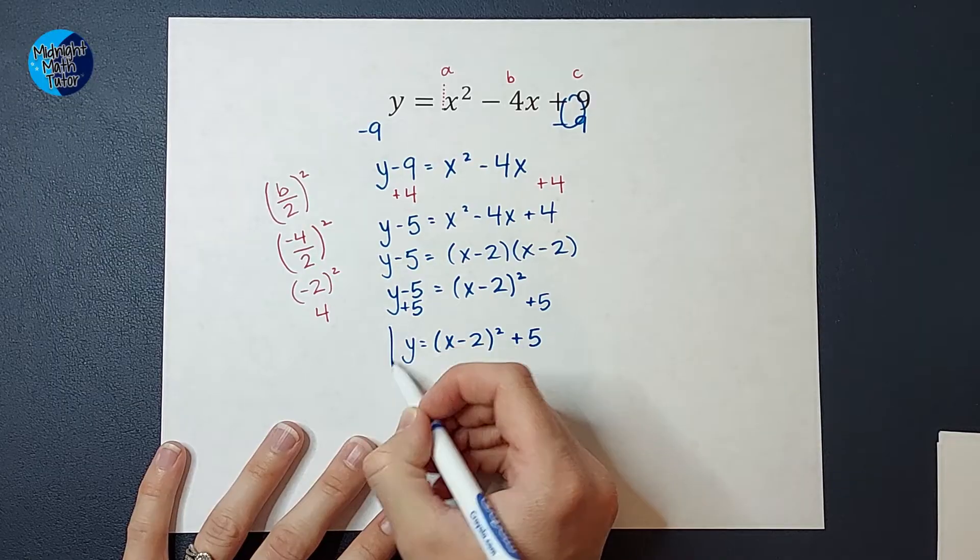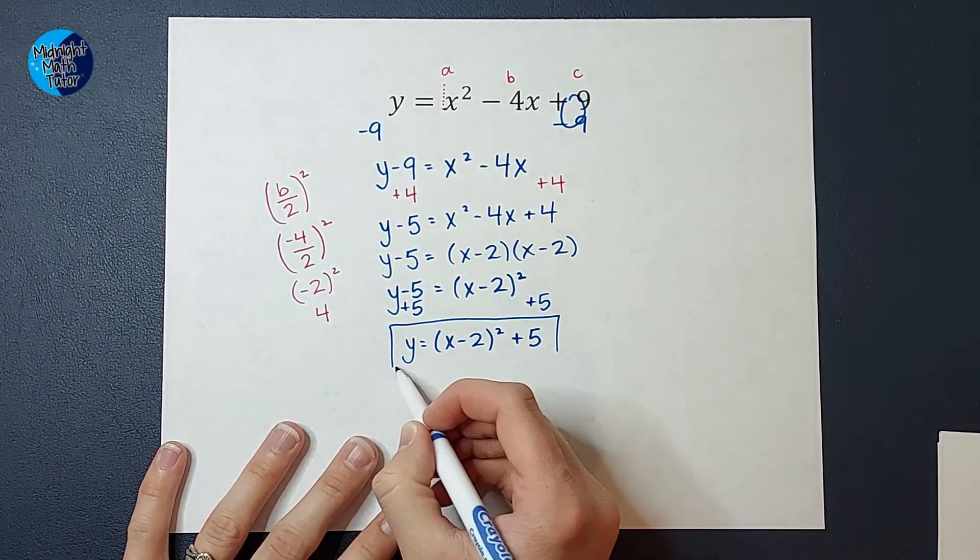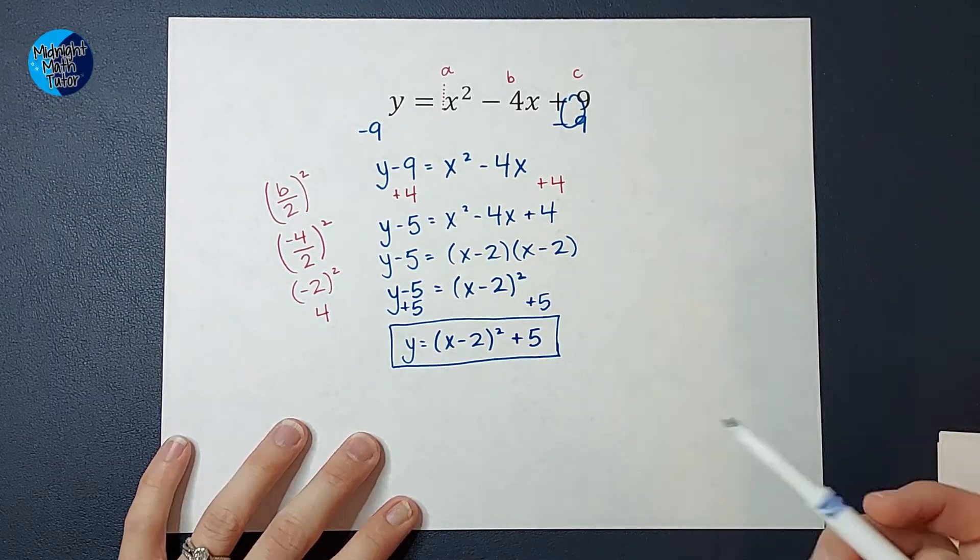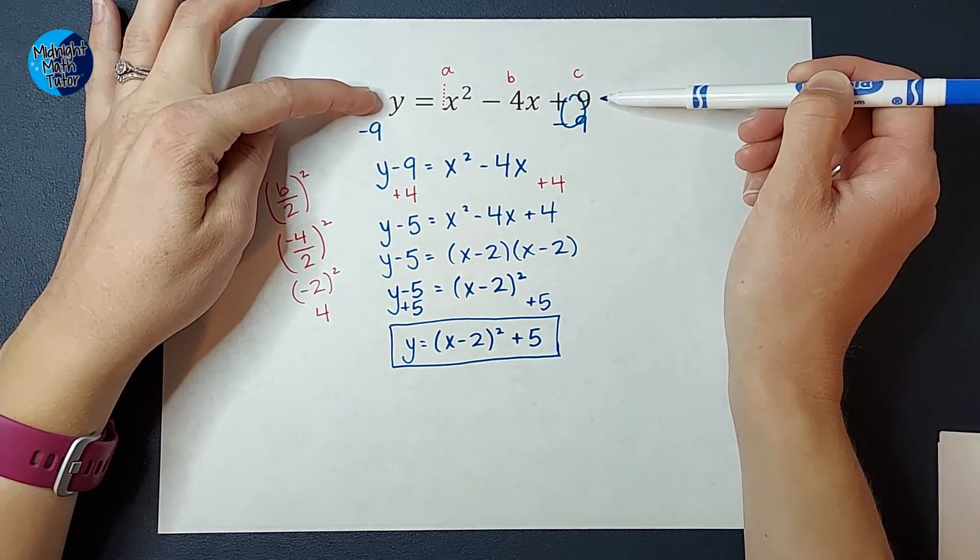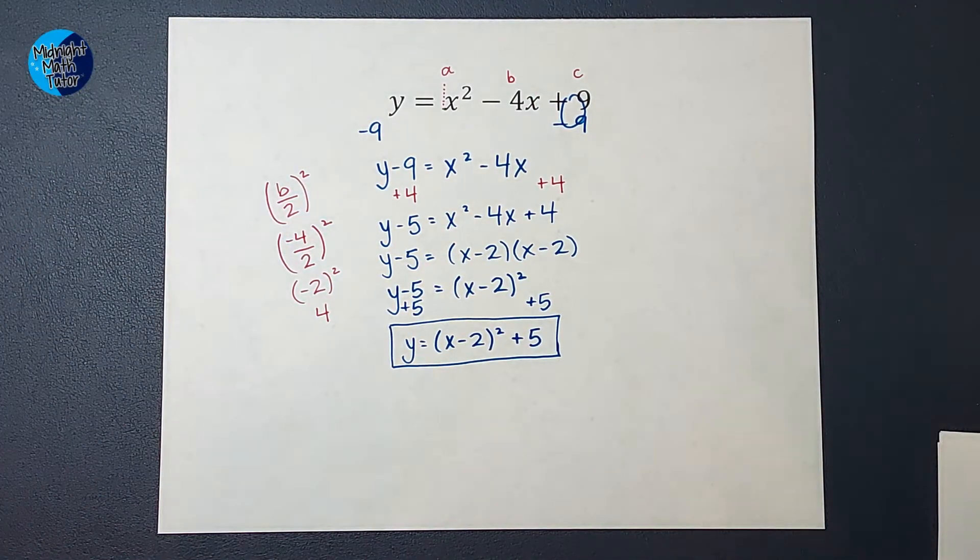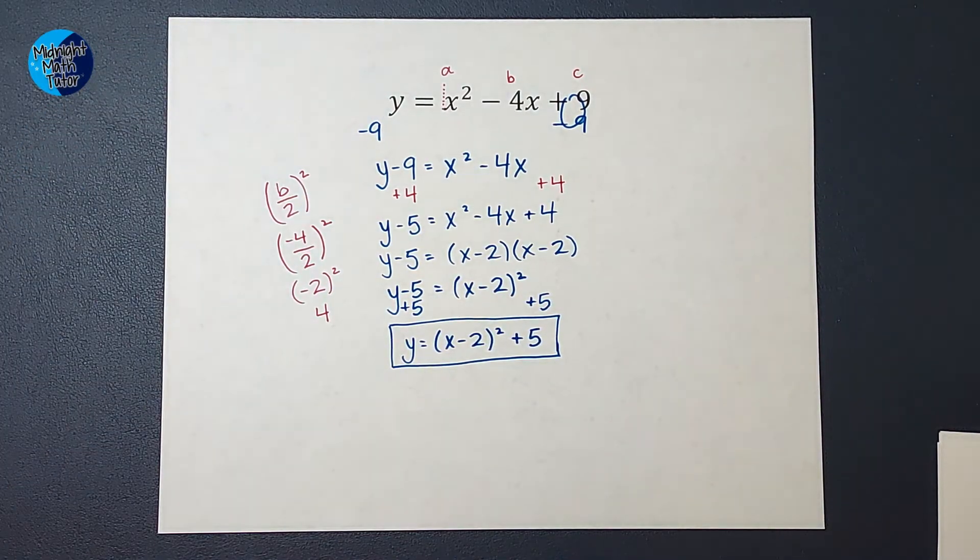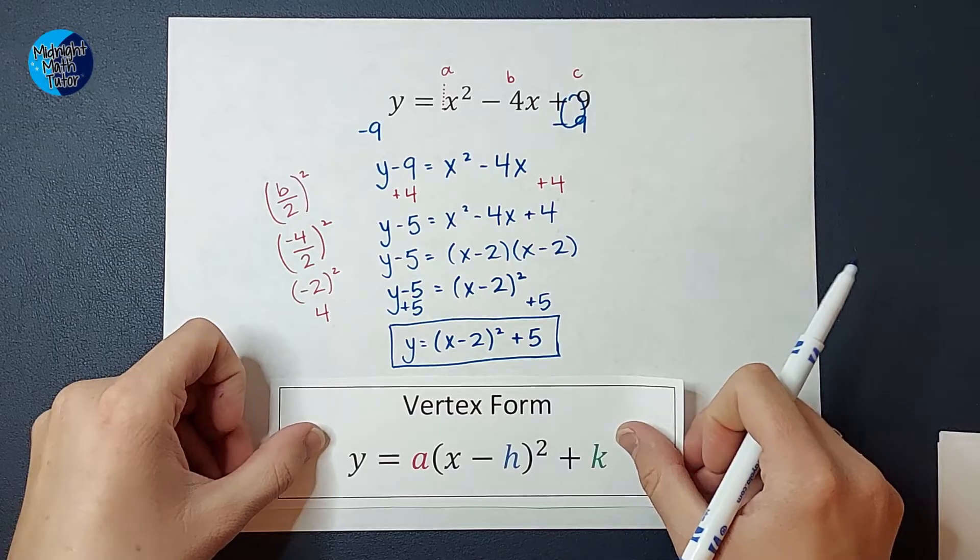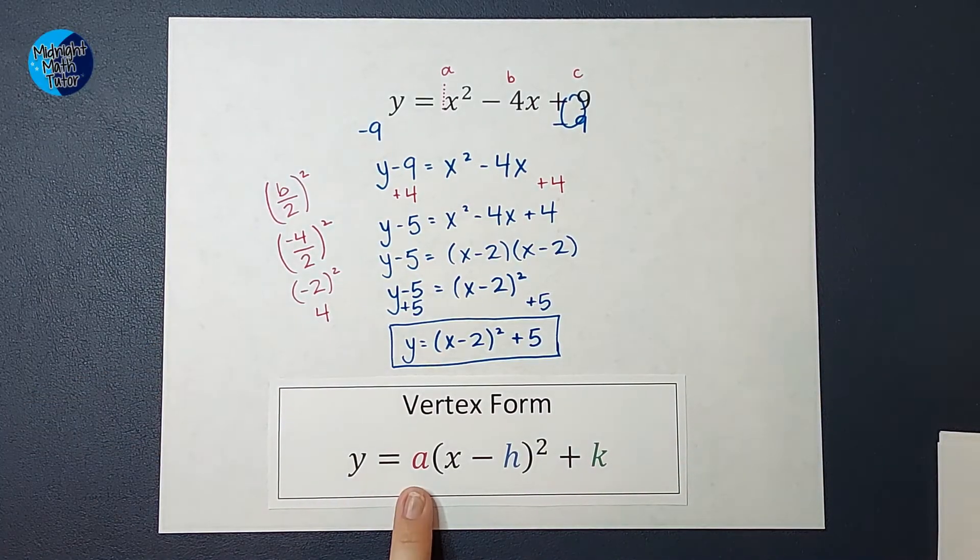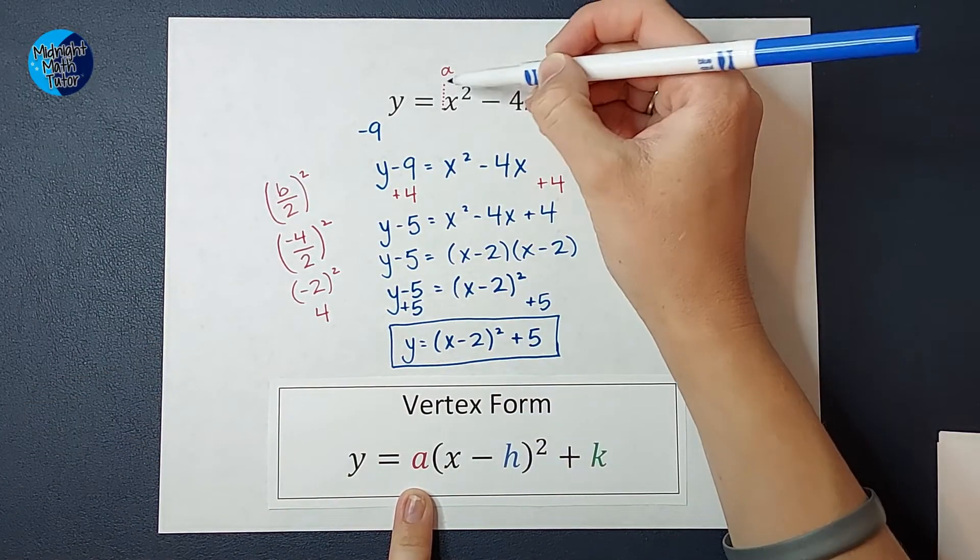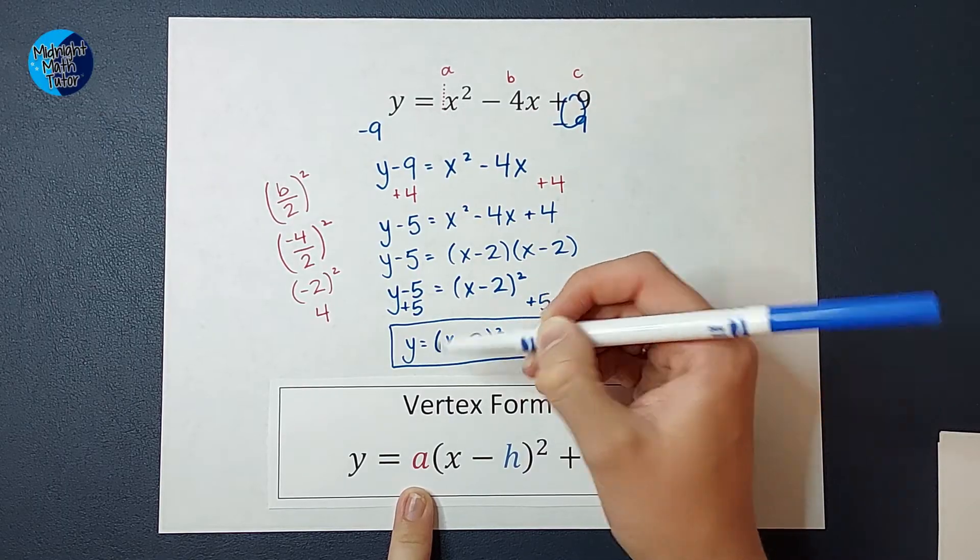And would you look at that? That is the vertex form of this equation. They look a little different, but they are the same equation. If you were to graph both of these, it'd be the same graph. So there is my vertex form. Now if you're like, there's no a, it's actually a 1, just like there was an invisible 1 up here, there's an invisible 1 right there.